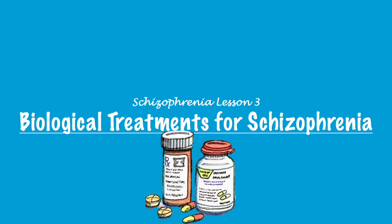Right guys, welcome back to some more A-level psychology. This is Schizophrenia Lesson 3 and we're going to be looking at biological treatments for schizophrenia. We'll start with the outline bits and then we'll move on to the evaluation points in the second half. There's also a six-mark outline at the end so you can see how it would all come together in an essay style question.